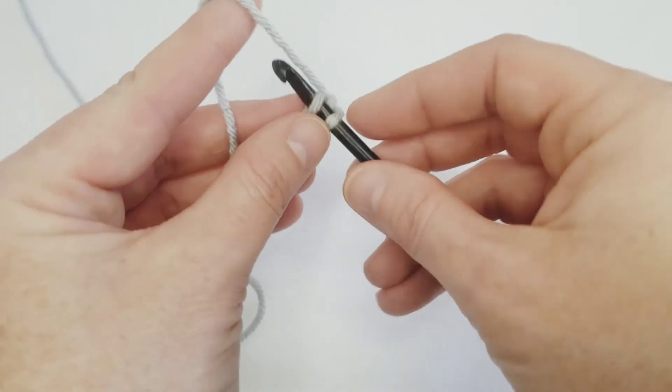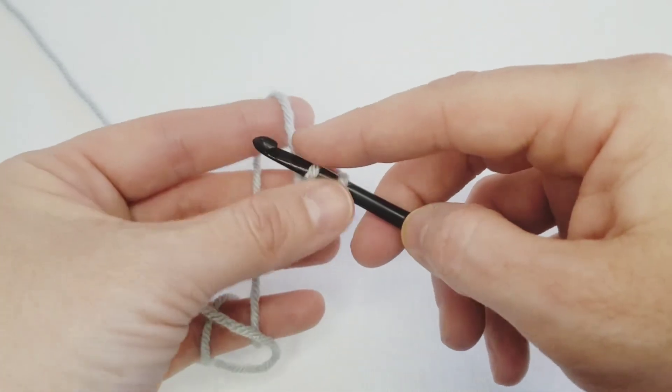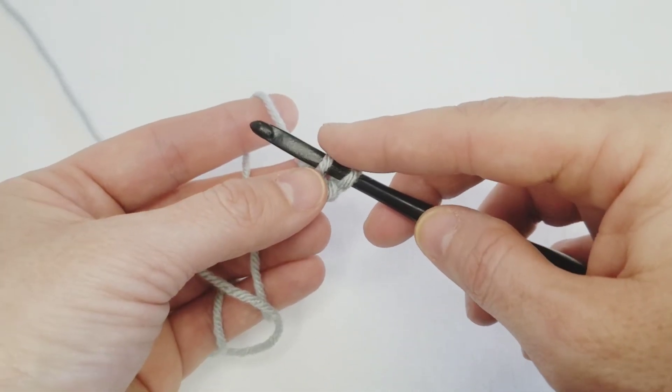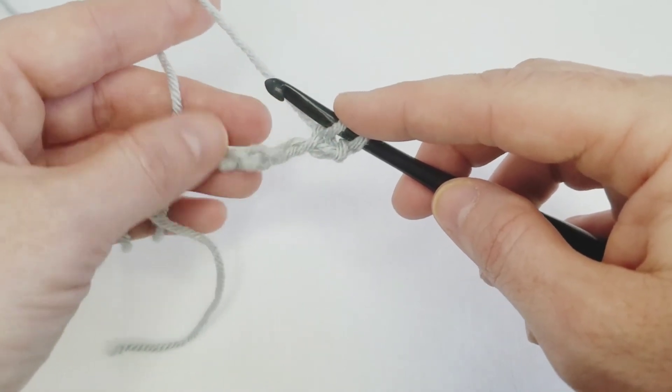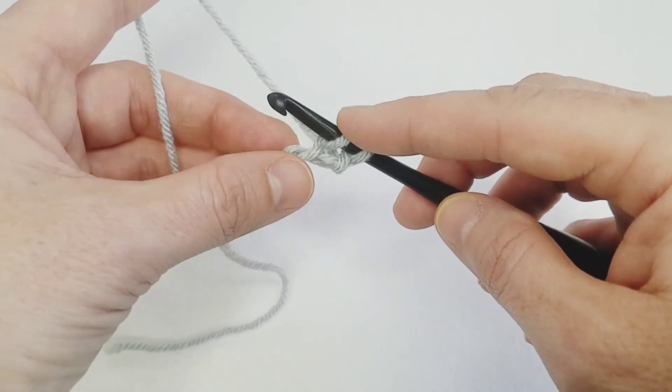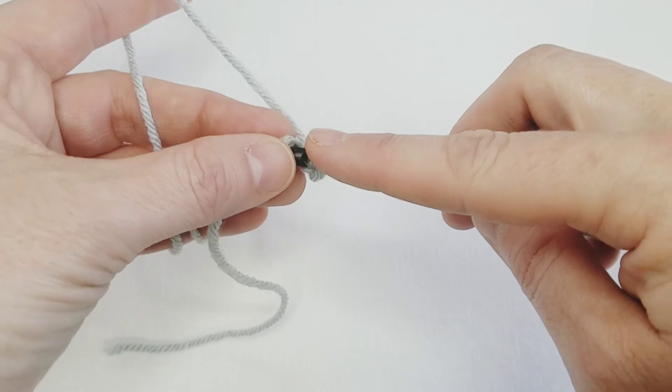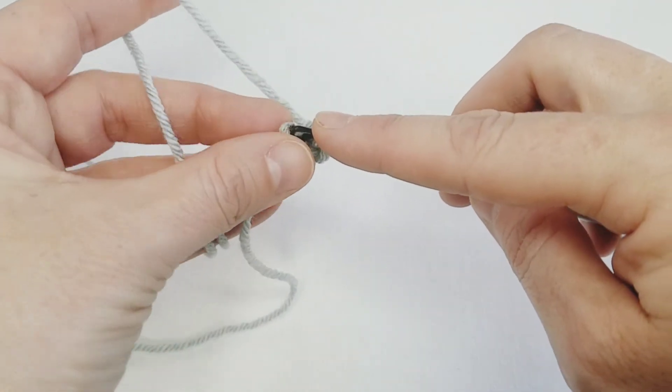Now one of the ways that Tunisian crochet is different from regular crochet is that you stack up the loops all on your hook to make your stitches. So this is what we're doing—we're just setting up for Tunisian crochet stitches.